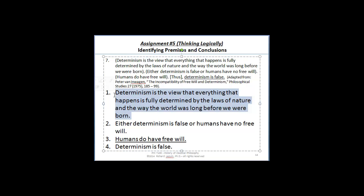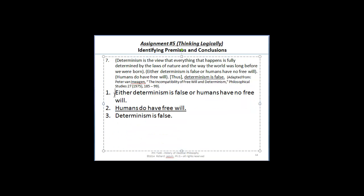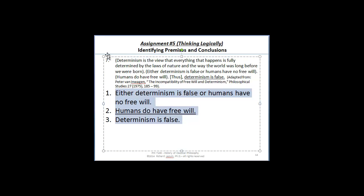So I think another way, and perhaps a better way of reconstructing the argument, is taking that first definition of determinism out and just leaving the argument formulated this way. Either determinism is false or humans have no free will. Humans do have free will, therefore determinism is false.